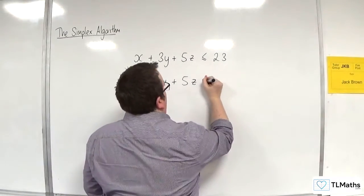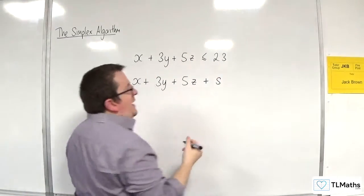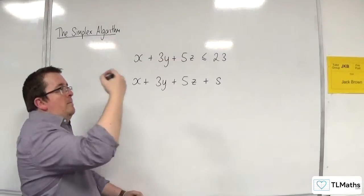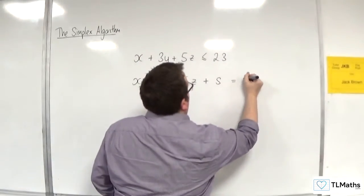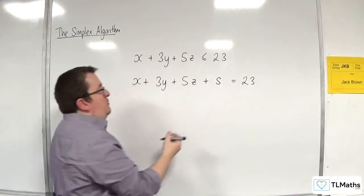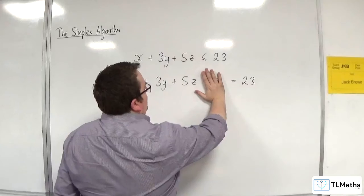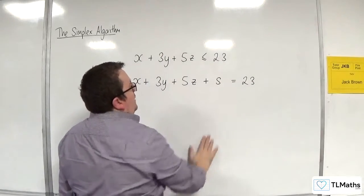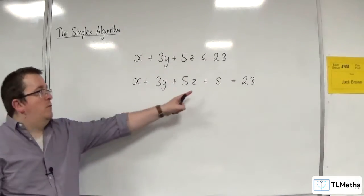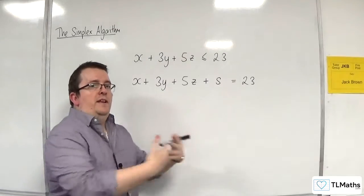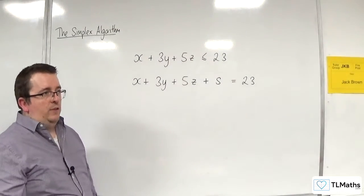So I'm going to add on an amount, let's say s, that means I am actually at 23. Now s could be 0 and I could be at 23. That's perfectly fine. But that extra bit that I'm adding on makes sure that it's always going to be equal to 23.